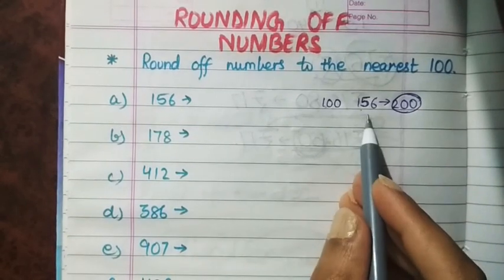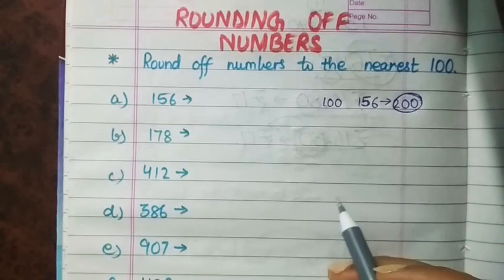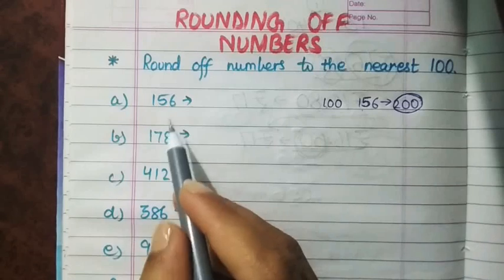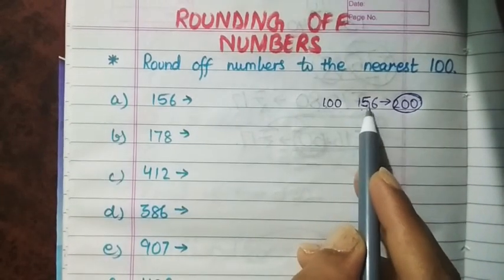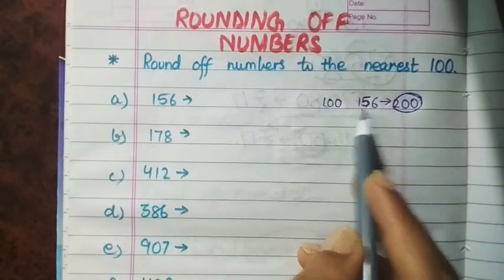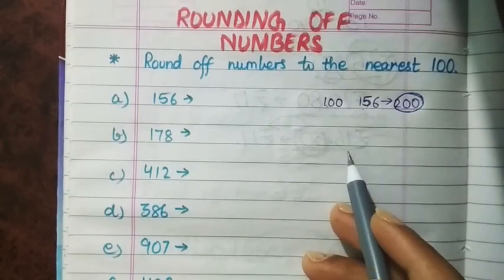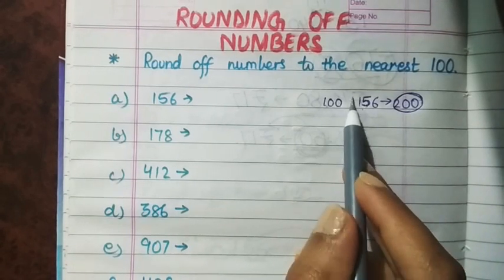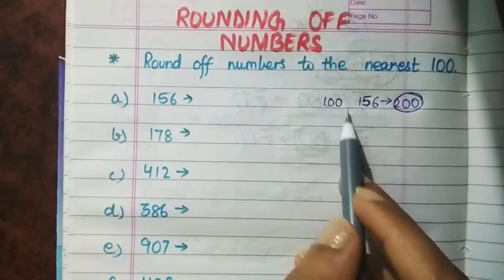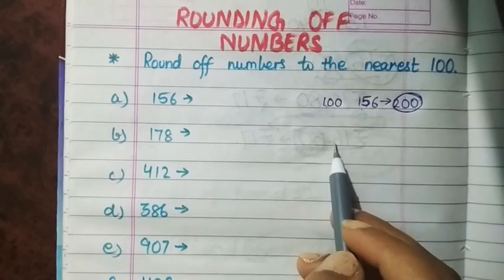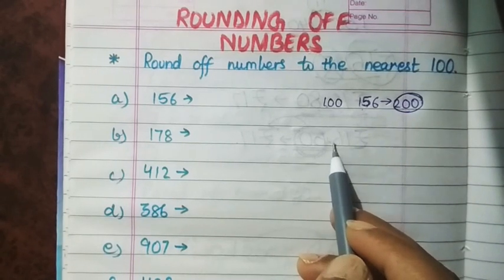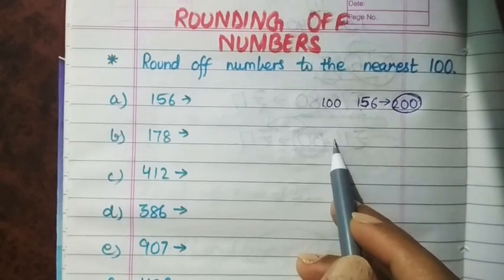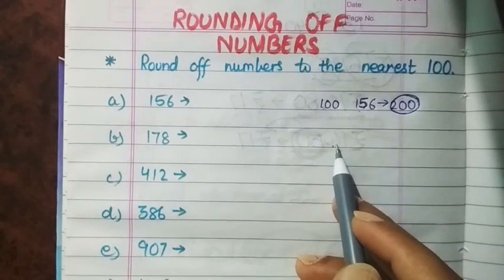But here I told you the answer quite directly. How will you get to know which 100 a number is nearest to? Though you can write all the numbers in between, there will be many numbers and it will take a lot of time. So we will learn some steps and then we will be able to do this question quite quickly.